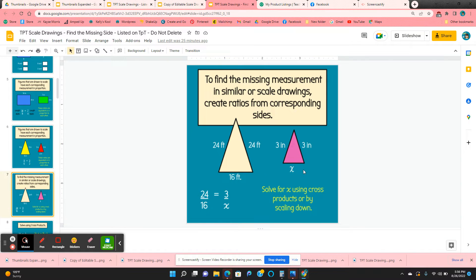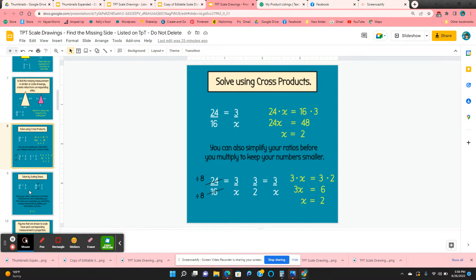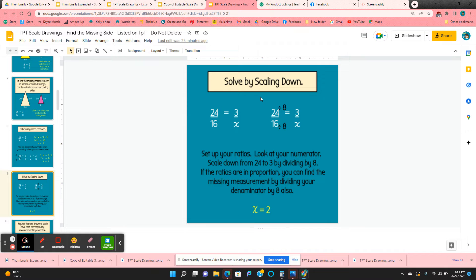And then how to solve for the missing measurement by creating a ratio. There are a couple ways to do that, so I show them how to solve for X using cross products and how to solve for X by scaling down.